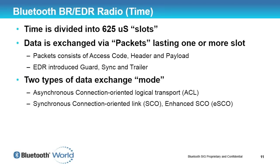Let's look at some of the simple pieces of technology that differentiate Bluetooth from other technologies. The first is that we use time division multiplex access to the media. Time is divided into 625 microsecond slots — some people will talk about frames, where a frame is two slots. That means there are about 1600 slots per second, and data is exchanged as packets lasting one or more slots.